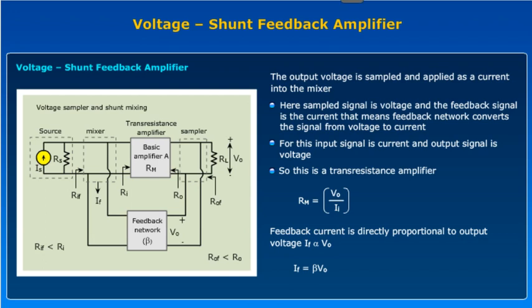Next, we will see the voltage shunt feedback amplifier. This block diagram shows that the voltage shunt feedback amplifier. Here in the voltage shunt, the mixing is the shunt mixing, so the signal source must be the current source, and the output is the voltage sampler. Here the input is a current and output is a voltage, so the basic amplifier used is a transresistance amplifier.